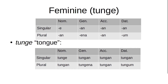Moving on to the feminine. Notice this is very similar to the masculine. The only difference is that the singular nominative ends in -e instead of -a. All the other forms are exactly the same: nominative -e, genitive -an, accusative -an, dative -an. Plural: nominative -an, genitive -ena, accusative -an, dative -um. Our example word is Tunge, which means 'tongue': Tunge, Tungan, Tungan, Tungan; Tungan, Tungena, Tungan, Tungum. Note that I'm saying Tunge and not Tunge — you say the G.